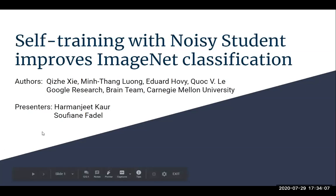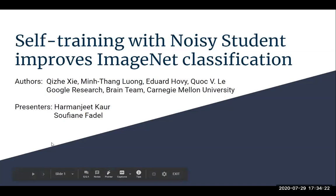Hi, I'm Harman and today me and Sufyan are going to represent the paper 'Self-Training with Noisy Students into ImageNet Classification.' The authors of this paper are Zizi, Minthang Liu, Edward Hovi, Kwikwi Ali, and these are the authors from Google Brain and Carnegie Mellon University.